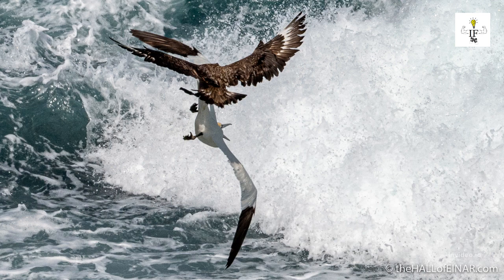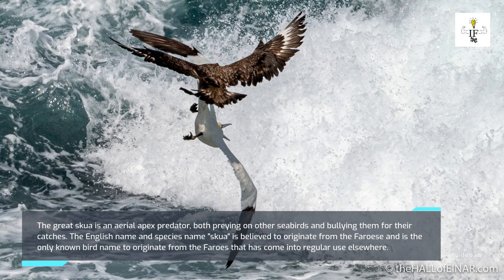The great skua is an aerial apex predator, both preying on other seabirds and bullying them for their catches. The English name and species name 'skua' is believed to originate from the Faroese language and is the only known bird name to originate from Faroese that has come into regular use elsewhere.